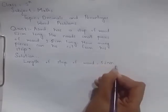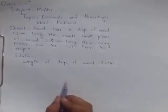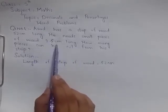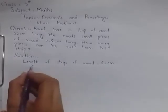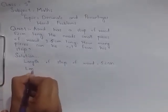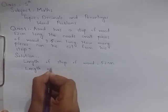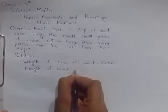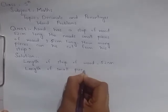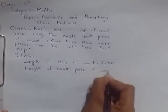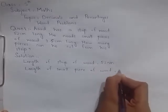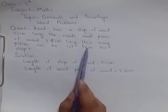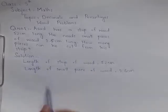Now students, here the length of small piece is 2.6 centimeter. Here I write: length of small piece of wood is equal to 2.6 centimeter. Students, we find how many pieces, means number of pieces.